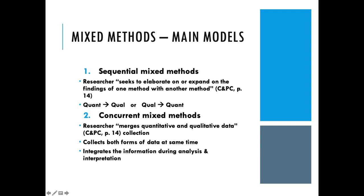The other main model is concurrent mixed methods, where data is being collected and analyzed at the same time. It merges the quantitative and qualitative data strands and integrates them. Depending on how you structure it, you can integrate at the data collection phase, the analysis phase, or collect and analyze separately but essentially at the same time and then bring your conclusions together at the end — but essentially you're collecting your data sets at the same time, not relying on one to inform the other.